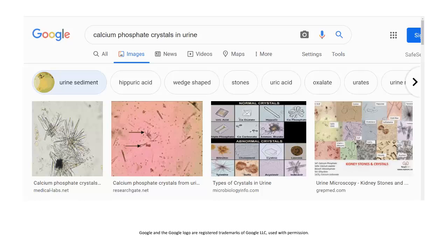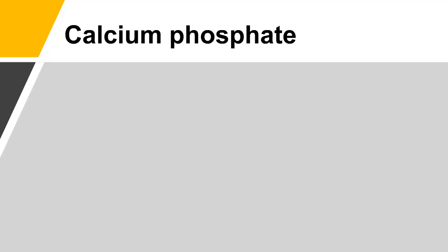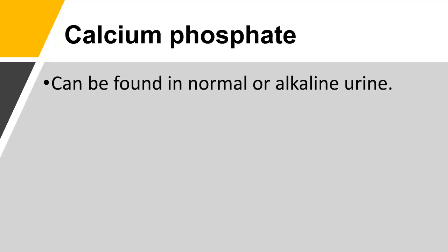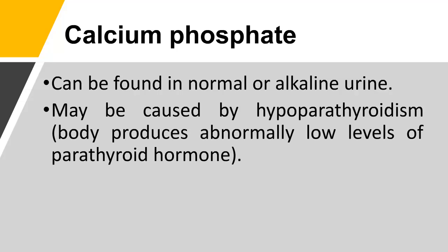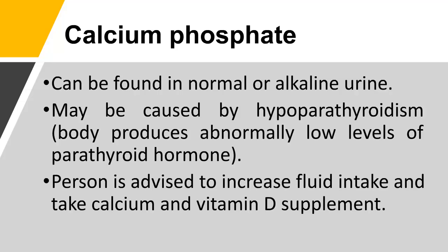Calcium phosphate crystals in urine can be found in normal or alkaline urine and may be caused by hypoparathyroidism, where the body produces abnormally low levels of parathyroid hormone. A person is advised to increase fluid intake and take calcium and vitamin D supplements.